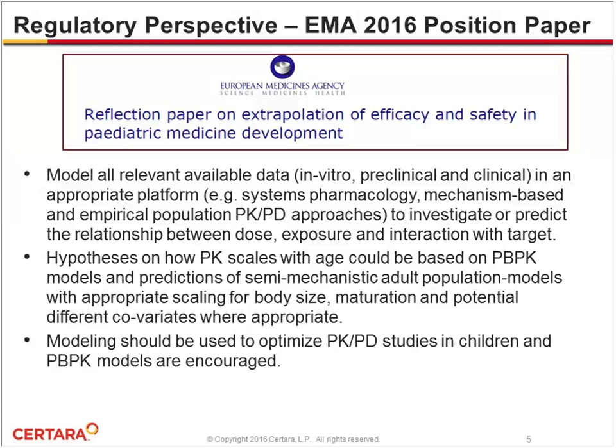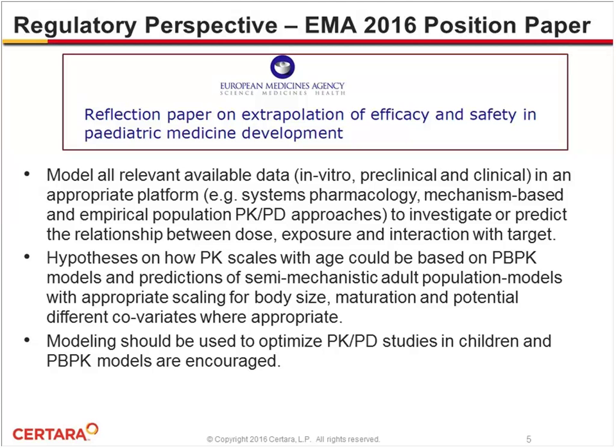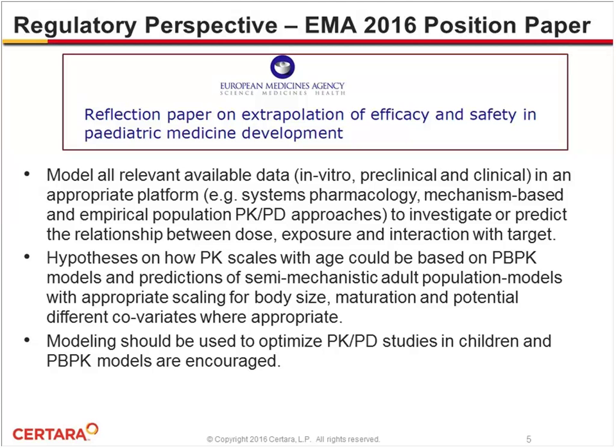This integration approach can also be used to scale PK with age, and specifically the PBPK approach is mentioned. Alternatively, semi-mechanistic population models can be used to account for not only body size but also maturation of organs, drug ontogeny functions for drug metabolizing enzymes, and appropriate covariates. It is highly recommended to use a modeling approach to optimize PK-PD studies in children, and PBPK models are encouraged.